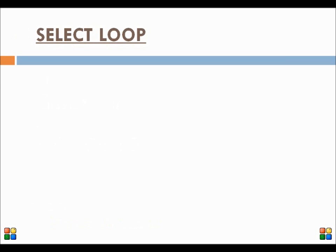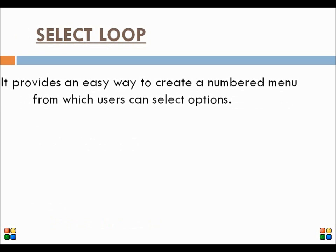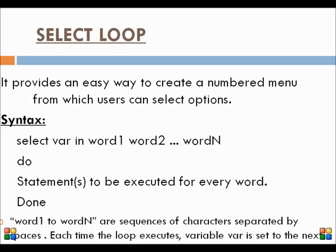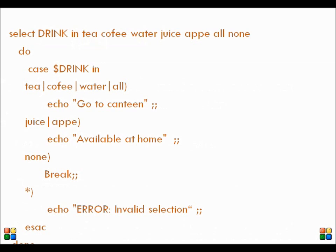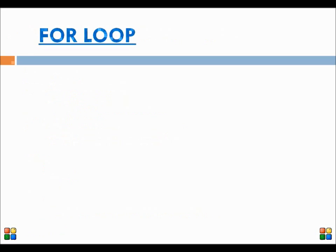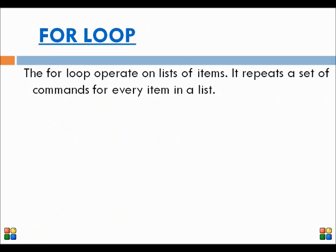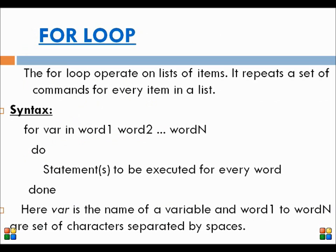The next loop is the select loop. It provides an easy way to create a numbered menu from which users can select options. Basically, select loop is a combination of for and switch statements. It is helpful if the user wants to choose one or more items from a list of choices — word1, word2, up to wordN, a list of choices separated by spaces. The next loop is for loop — a finite loop that repeats a set of commands for every item in a list. For every value of var, that is word1, word2, etc., the set of statements will be executed.